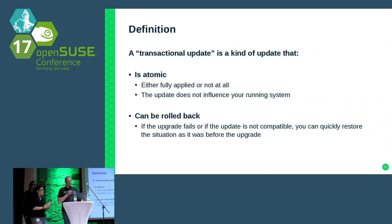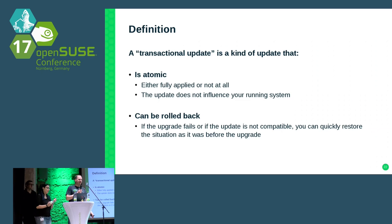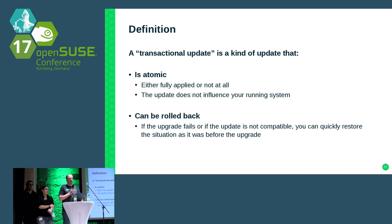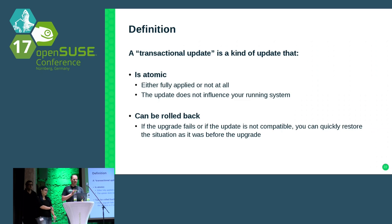The second part is that updates can be rolled back. If you get a new kernel update and the machine doesn't boot anymore, you want an easy way to go back to the state before the kernel update and get your systems running again. That is possible with BtrFS snapshots and rollback, just like we do with Tumbleweed.